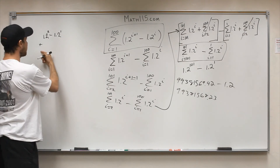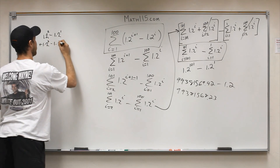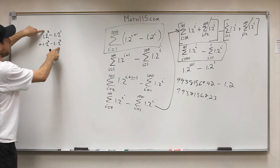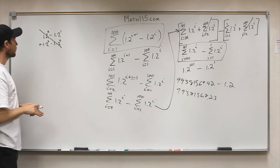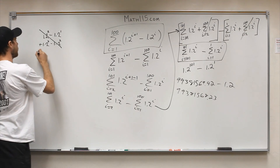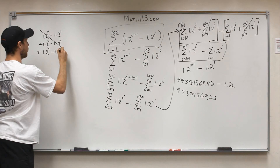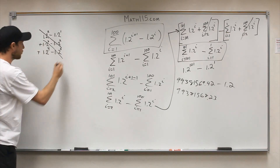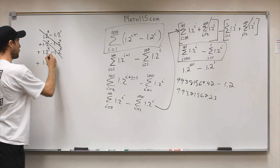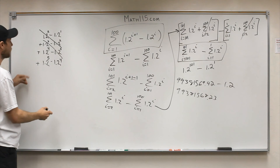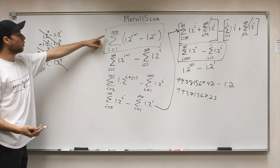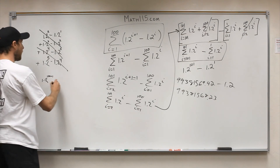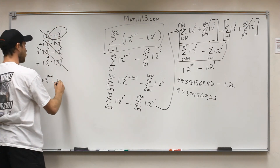So we then have plus 1.2^3 minus 1.2^2. When you look at this, you can see that the positive 1.2^2 and the negative 1.2^2 cancel out — that's very convenient. Then we add 1.2^4 minus 1.2^3, and again 1.2^3 and negative 1.2^3 cancel. Then 1.2^5 minus 1.2^4, and again they cancel. If we did this all the way to i equals 100, we'd end up with 1.2^101 minus the only term left at the beginning, 1.2^1. This telescoping pattern gives the same result.